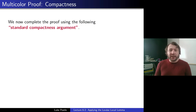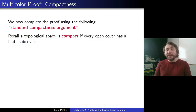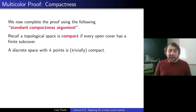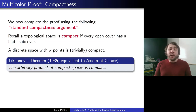We note that a discrete space with k points is trivially compact. And importantly, we have Tikhonov's theorem from 1935 — equivalent to the axiom of choice, which we will assume — which says that the arbitrary product of compact spaces is compact. So it's more of an axiom. This implies that the space of all k-colorings of R is compact: viewing each vertex as this discrete space, the k-colorings of R is the product of all those, and as an arbitrary uncountable product it's still compact by Tikhonov's theorem.